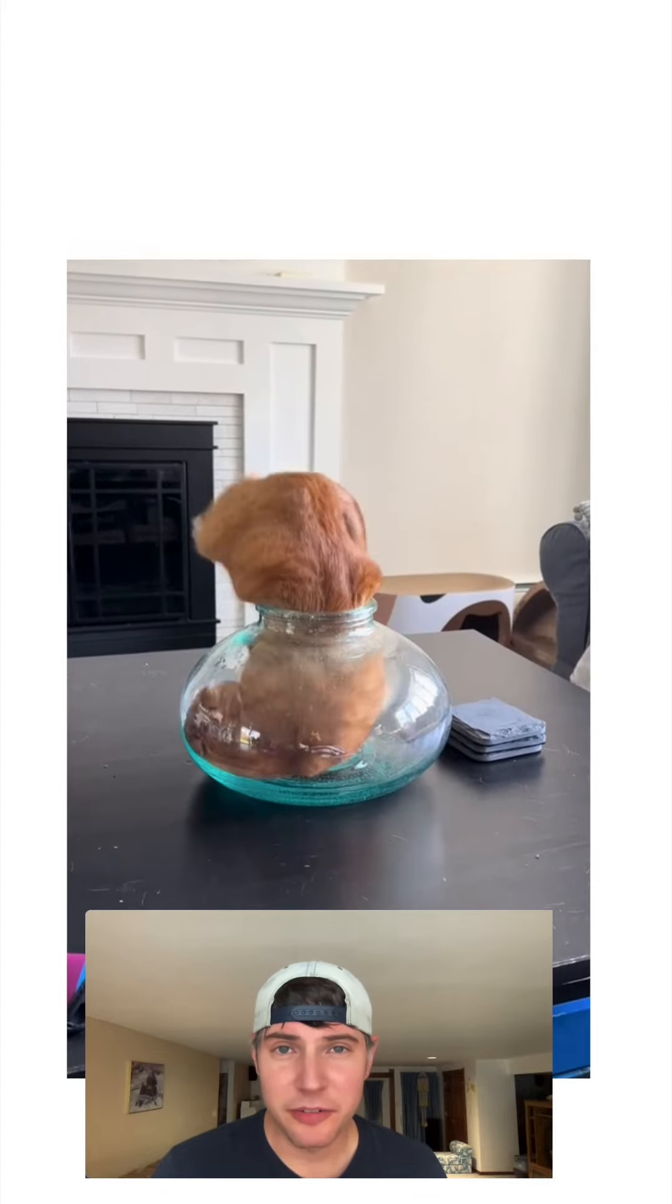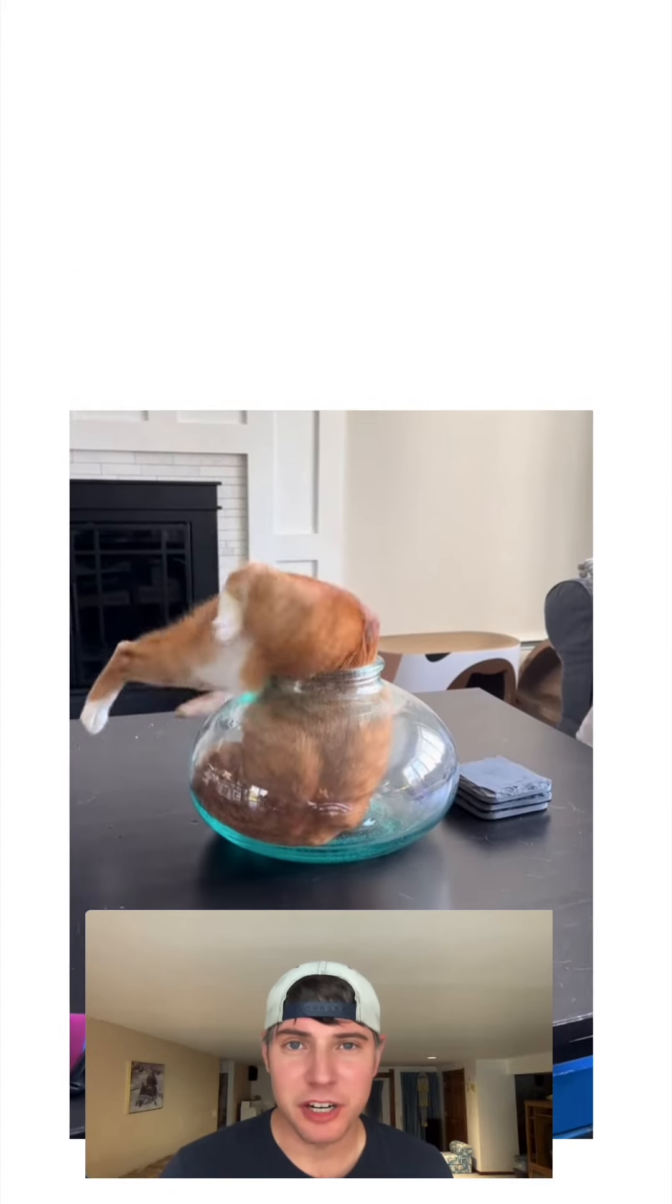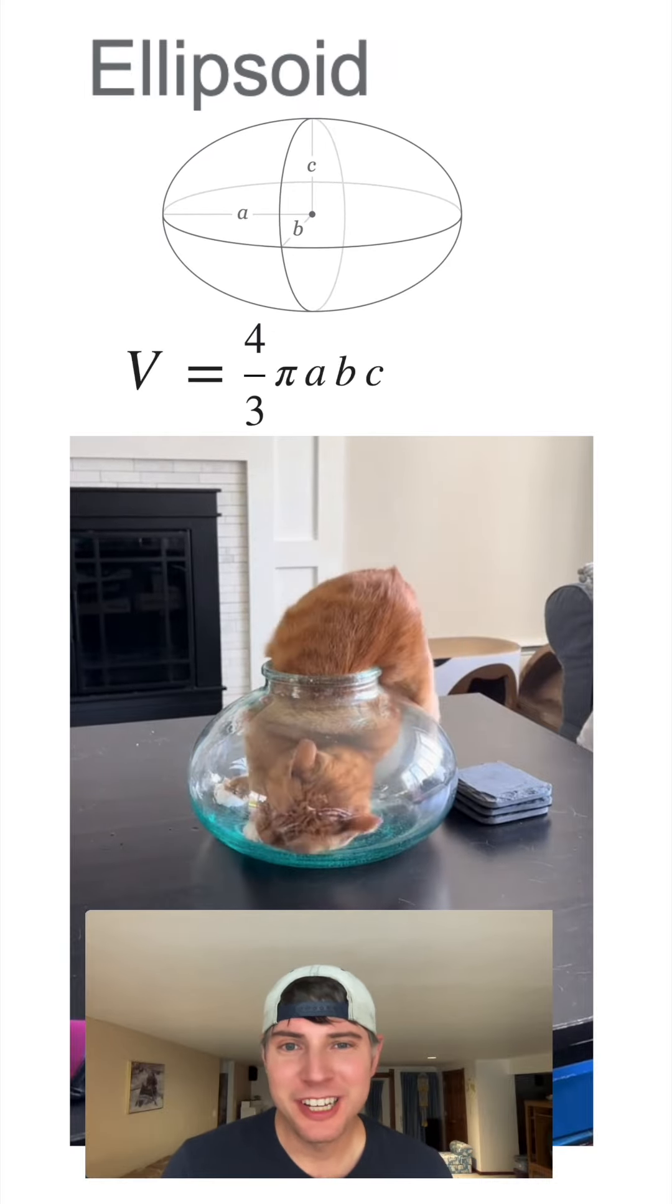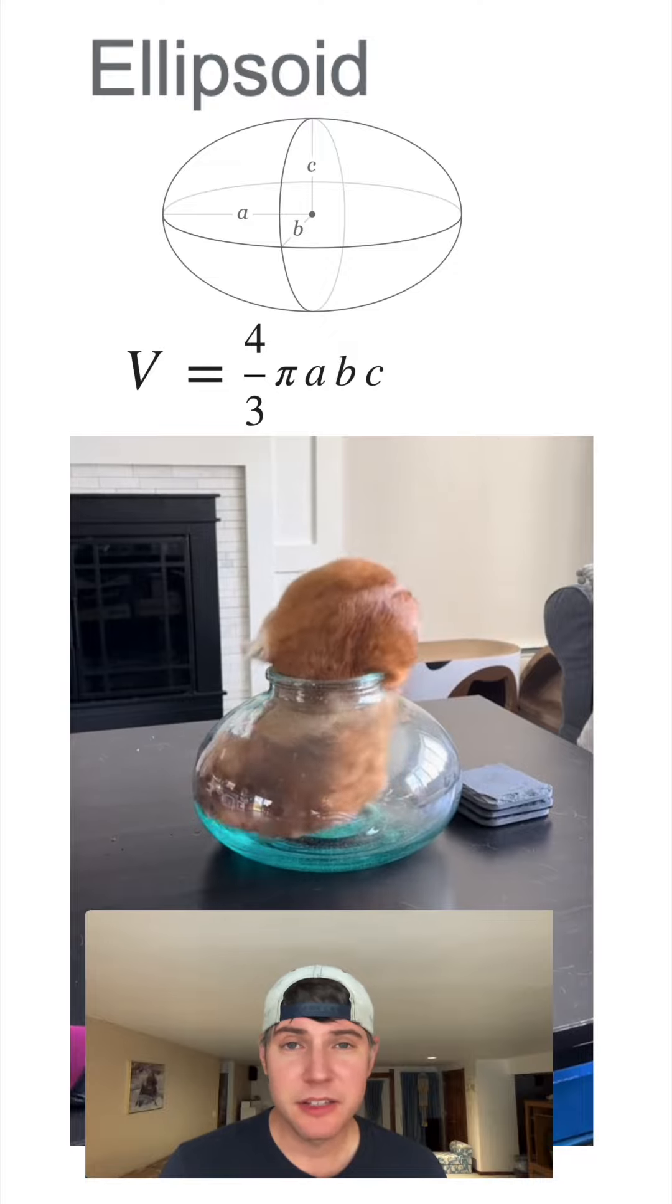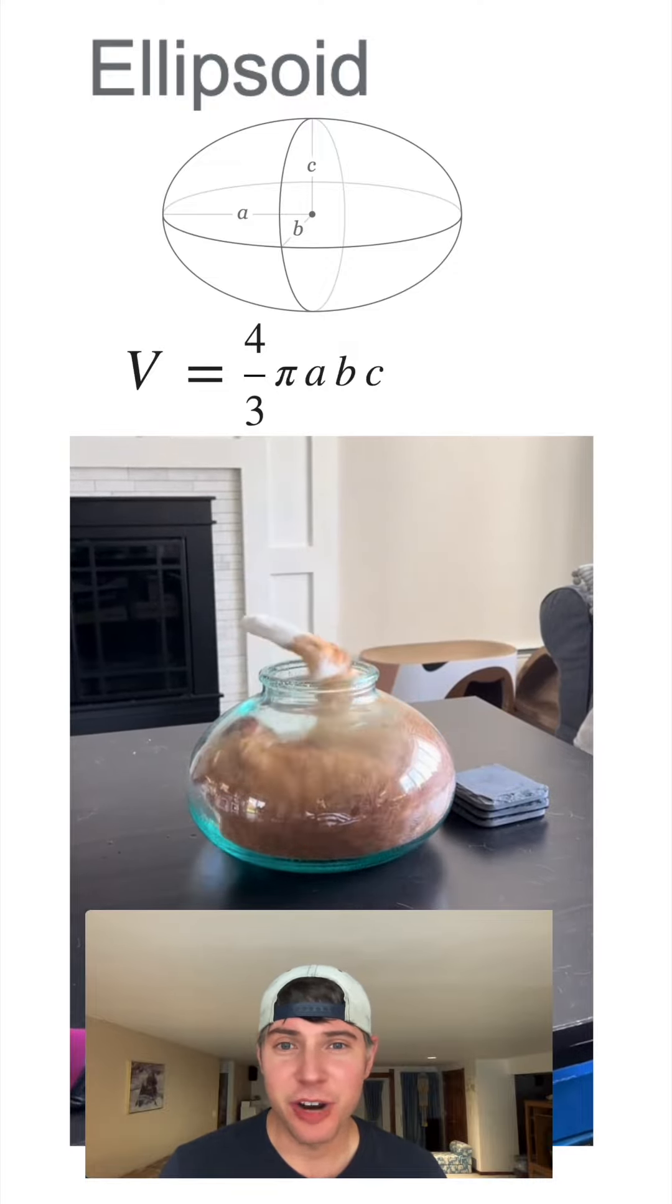So first, after carefully inspecting the shape, it looks like it can be approximated by an ellipsoid. The volume of an ellipsoid is four-thirds pi times A times B times C, where the A, B, and C are the radii in the various directions.